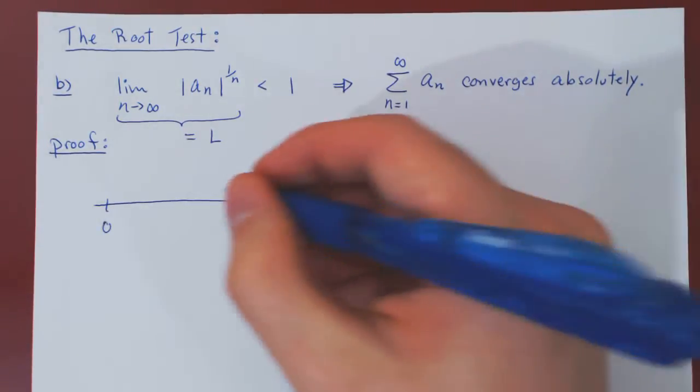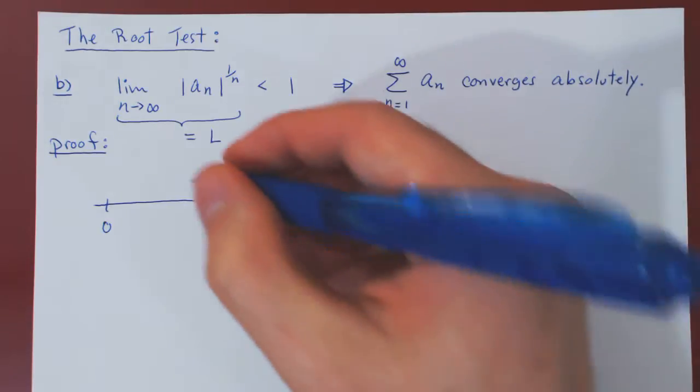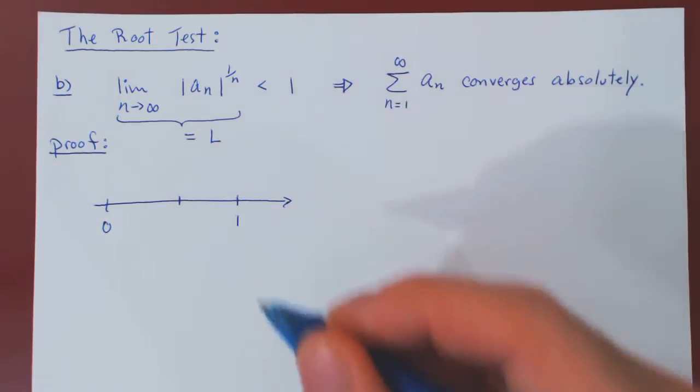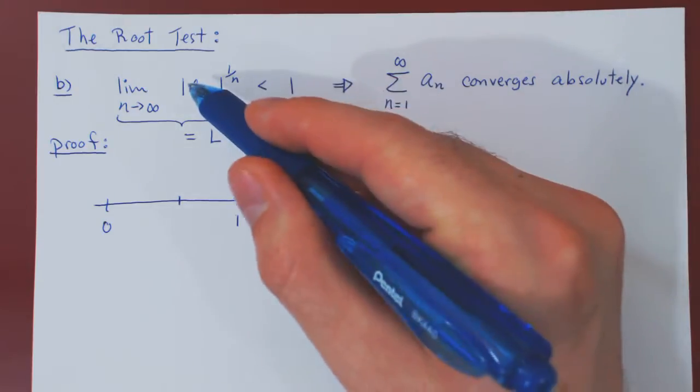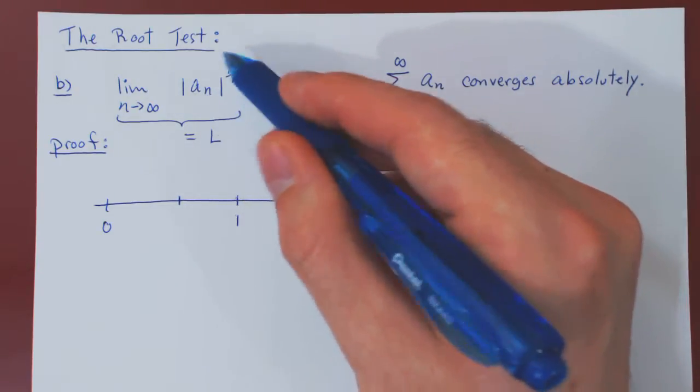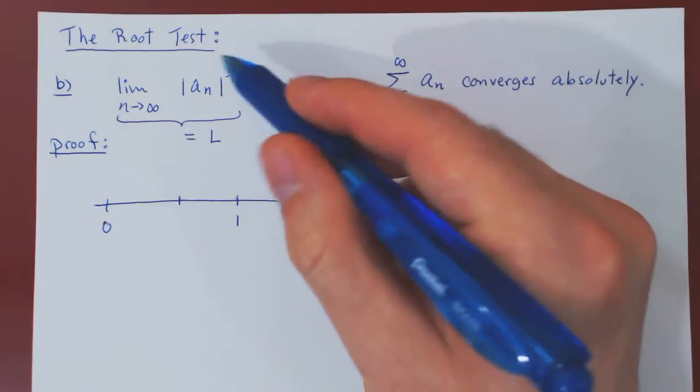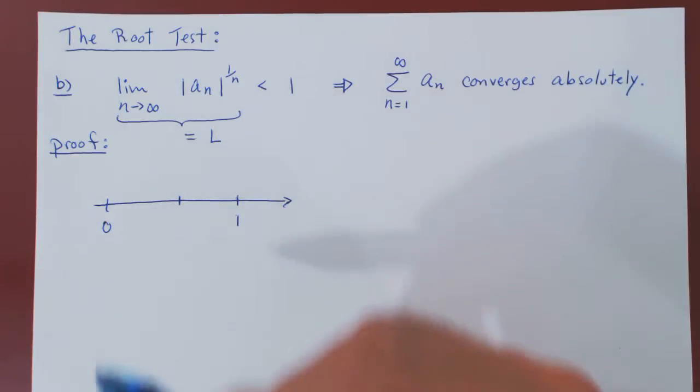This is 0, this is 1, and our limit is some real number less than 1. Now of course, since we take the nth root of a_n in absolute value, the terms are non-negative, so the limit must be at least 0.